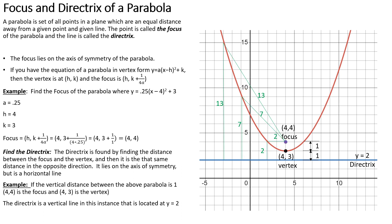We use the focus and directrix in many areas — especially in communication, telescopes, and the focusing of radars. That's where the word 'focus' comes from; it brings everything to one point. They even do this in solar power to focus all the sunlight into one area. The focus location depends on not only the x component but also our h and our k.